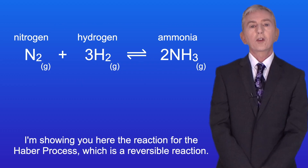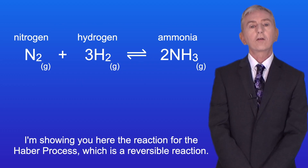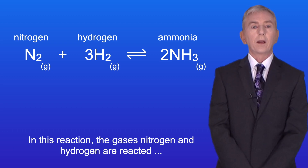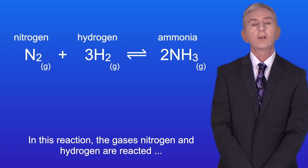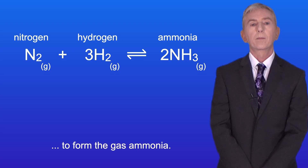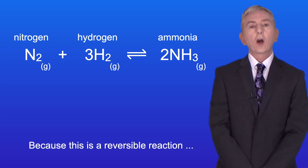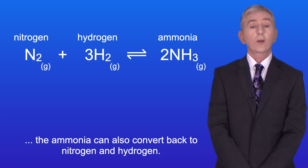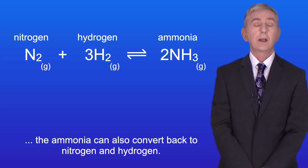I'm showing you here the reaction for the Haber process, which is a reversible reaction. In this reaction the gases nitrogen and hydrogen are reacted to form the gas ammonia. Because this is a reversible reaction, the ammonia can also convert back to nitrogen and hydrogen.